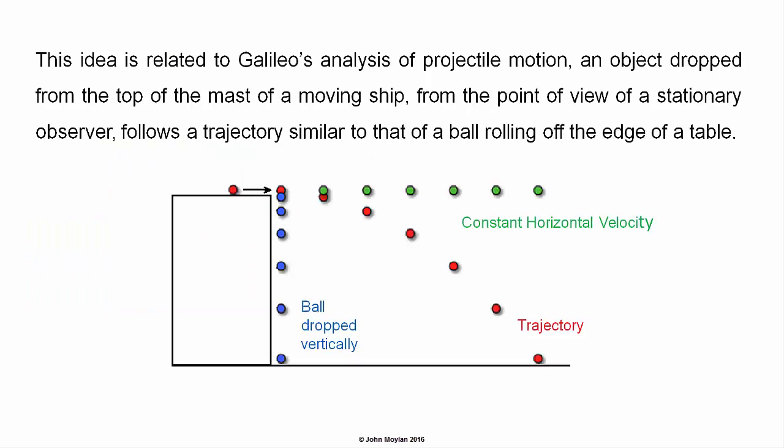This idea is related to Galileo's analysis of projectile motion. An object dropped from the top of the mast of a moving ship, from the point of view of a stationary observer, follows a trajectory similar to that of a ball rolling off the edge of a table.